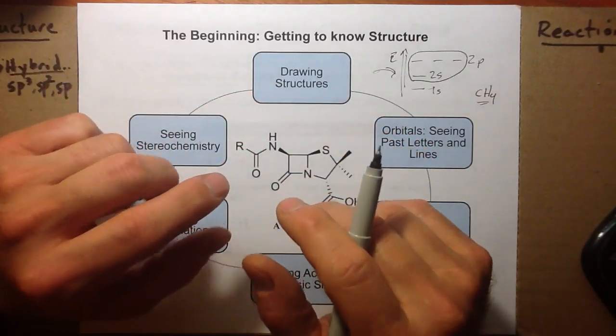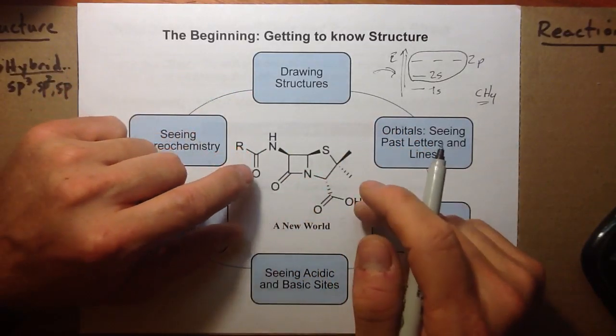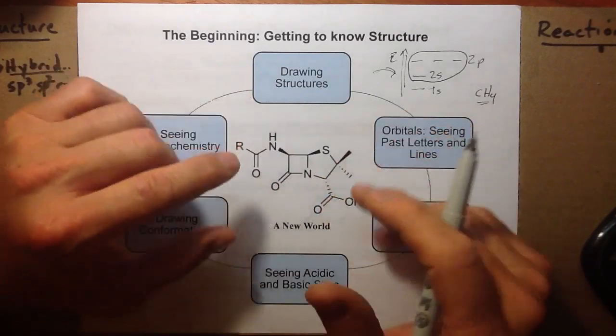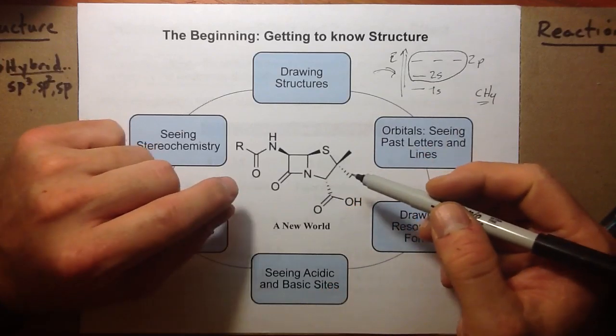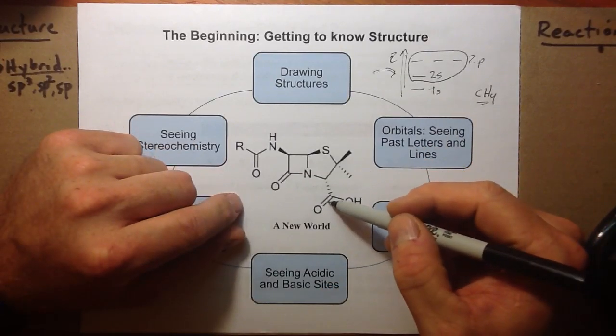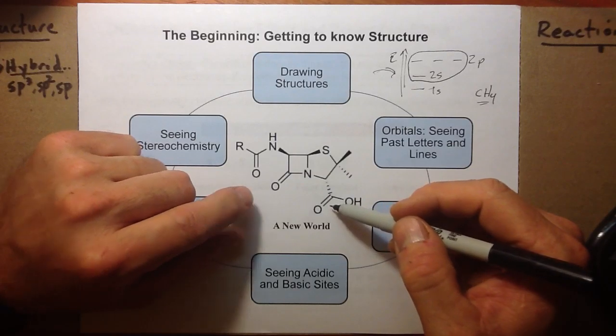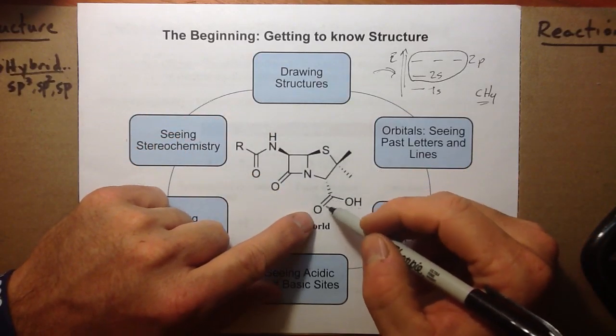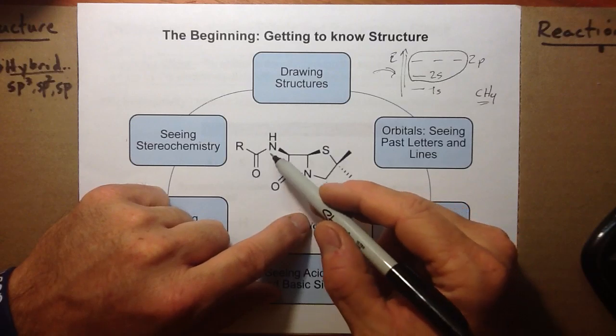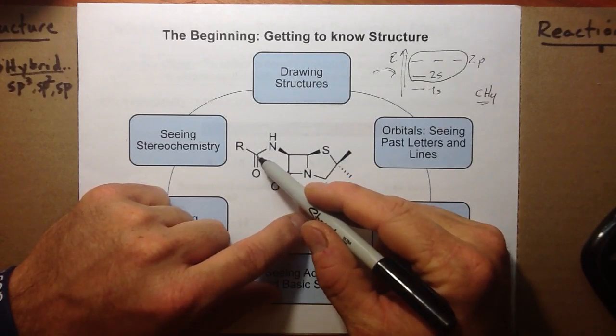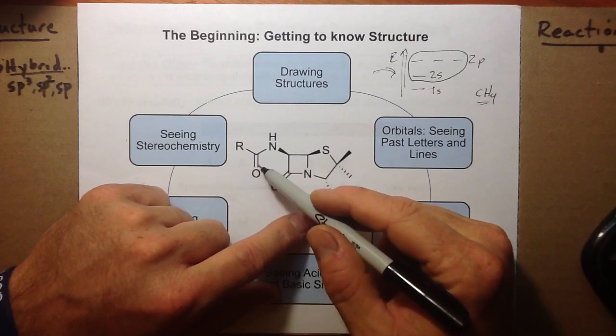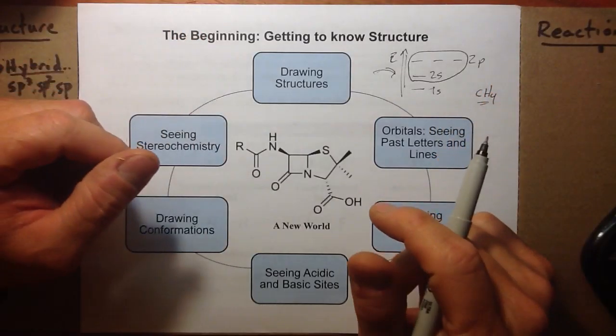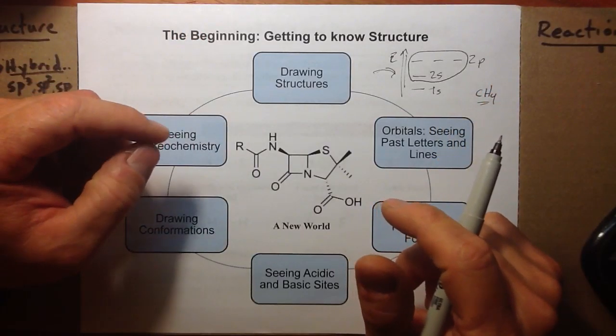Because what we'll be able to do after today's presentation is to be able to look at a structure like we have in the center here, our analog, our particular type of penicillin. After today, we'll be able to look at pi bonding and sigma bonding in a different way, by what we call resonance effect, or I should just say more accurately, by resonance and by inductive effect.